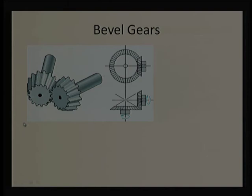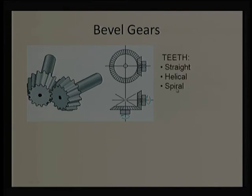Bevel gears use complex cone geometry. Bevel gear teeth can also be straight, helical, or spiral in terms of the tooth length profile. As straightness reduces — going from straight to helical to spiral — engagement increases and noise reduces. Straight teeth are least preferred from a noise standpoint; spiral bevel gears are quietest but most complex to manufacture. Manufacturing cost increases with increasing profile complexity.